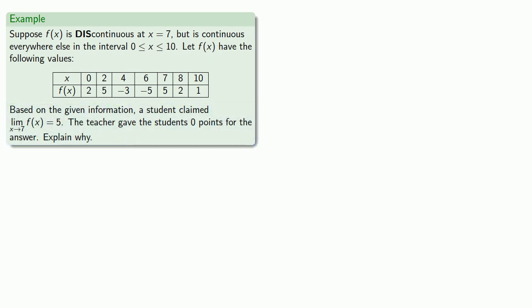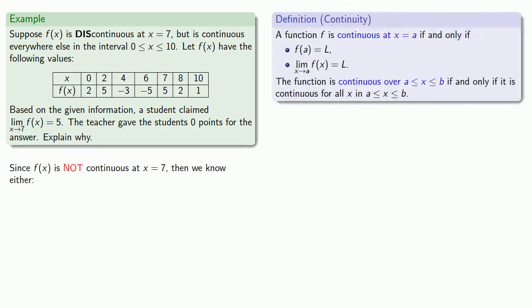So let's take this problem apart. Since f of x is not continuous at x equals 7, then we know either f of 7 does not exist. But we know that f of 7 is equal to 5. So that's not a problem.